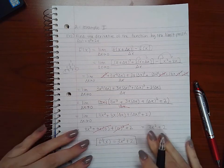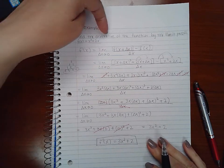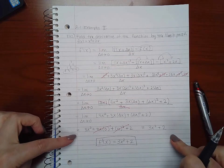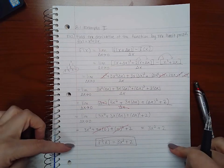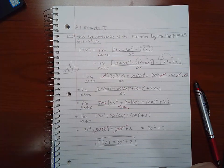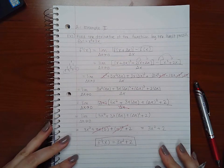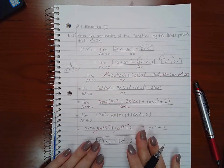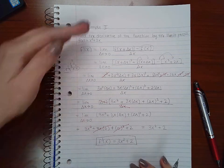Now again, if the problem says find the derivative by the limit process, you have to show your work and you have to do the limit. If it just says find the derivative, then you'll be allowed to use the shortcuts that we'll figure out later on in a later section. I just want you to be aware of that in case you try to do this on the test.